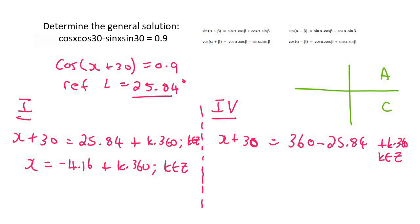And then for the one on the right hand side, if you have to move the 30 over, you would eventually end up with x being 304.16 plus k times 360, k is an element of z.